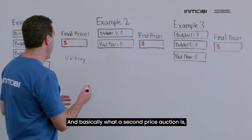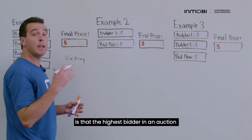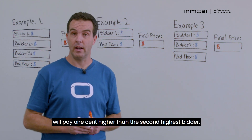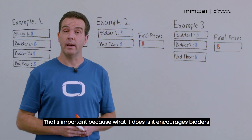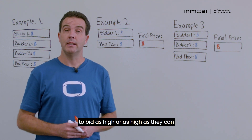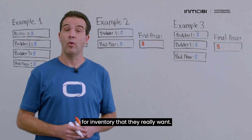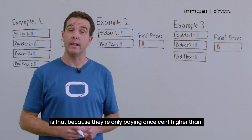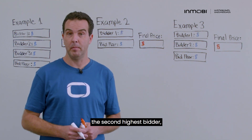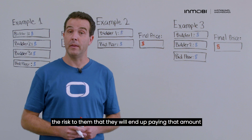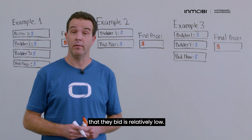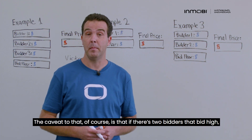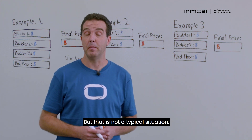Basically, what a second price auction is: the highest bidder in an auction will pay one cent higher than the second highest bidder. That's important because it encourages bidders to bid as high as they can for inventory they really want. The reason that's important is that because they're only paying one cent higher than the second highest bidder, the risk that they'll end up paying the full amount they bid is relatively low. The caveat, of course, is that if two bidders both bid high, the final price will end up being high — but that is not a typical situation.